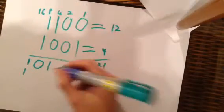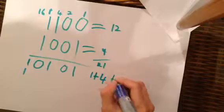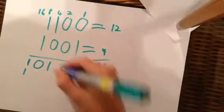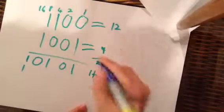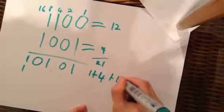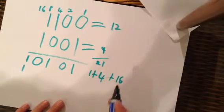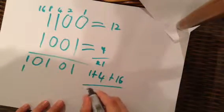There's 1 plus nothing in the 2s, plus 4, plus nothing in the 8, and you go to the 16s. It's basically just 1 plus 4 plus 16. 16 plus 4, 20 plus 1, equals 21.